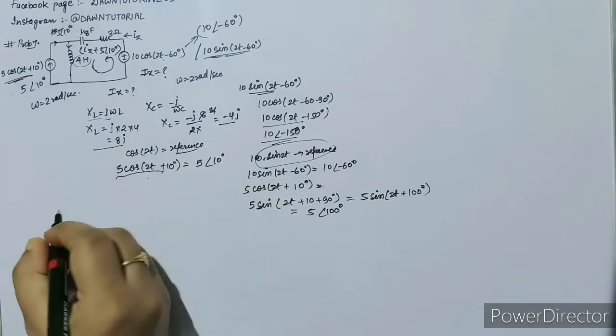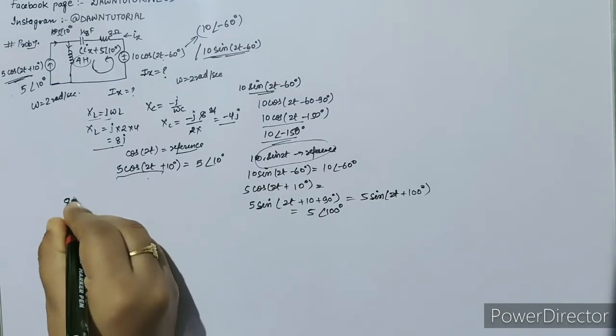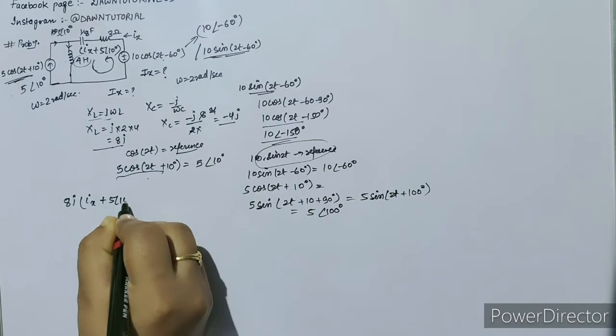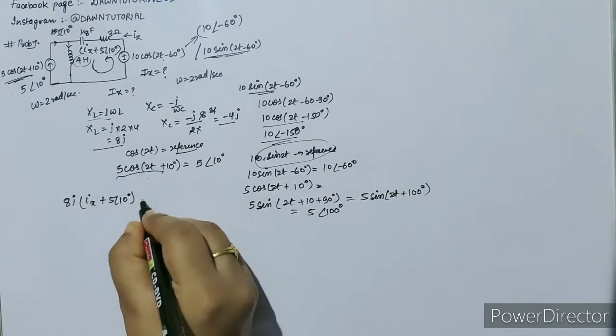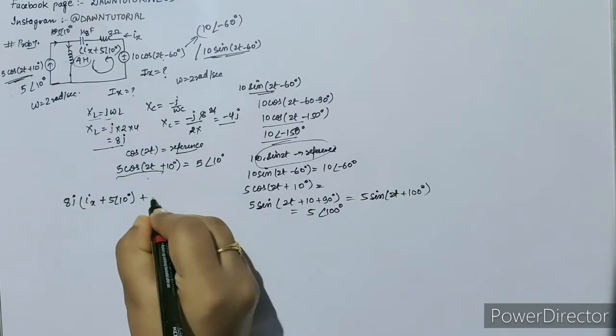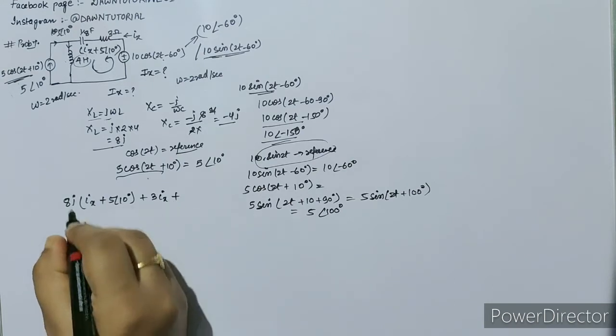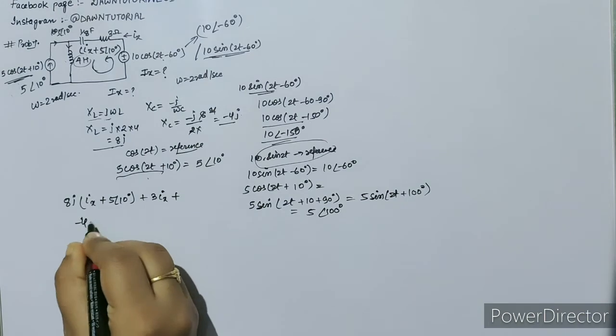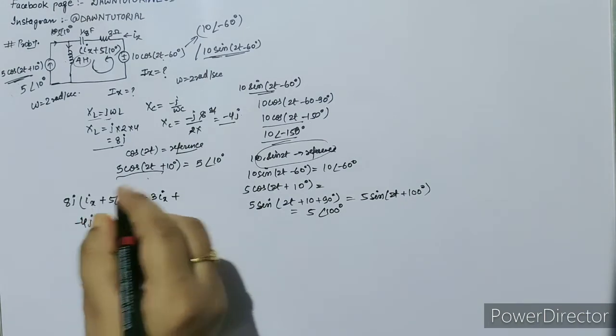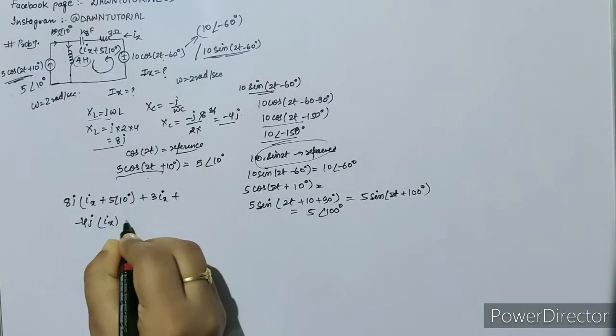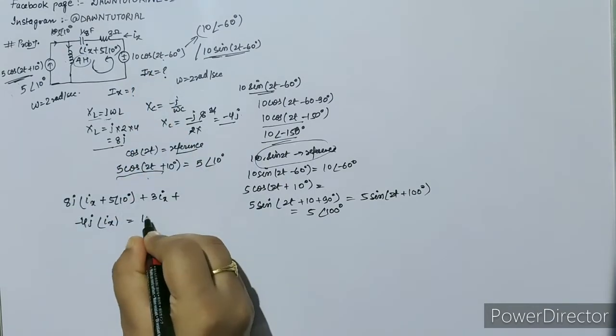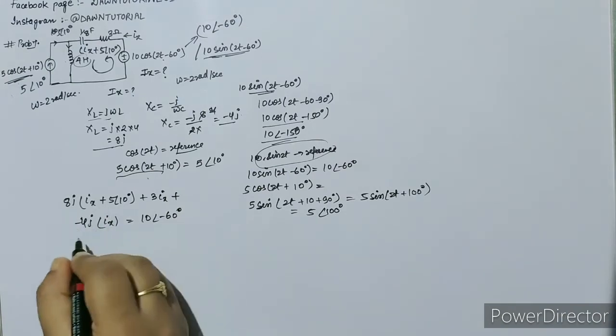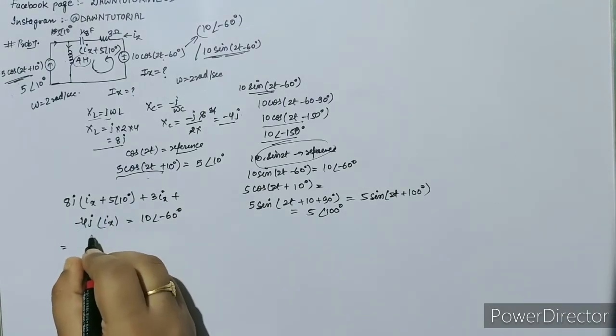So the impedance of this inductor is 8j, so 8j times (ix + 5∠10°), plus 3 times (ix + 5∠10°), plus the capacitor impedance, which is 1/(jωC) or -4j times ix, equals 10∠-60°.